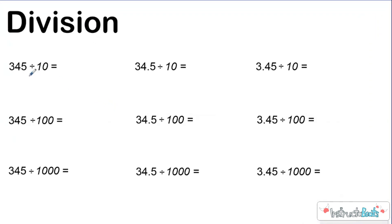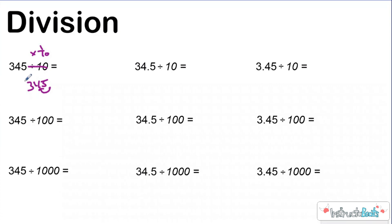Now we're dividing by ten. Remember, as we move to the left on our place value chart, we got bigger times ten. When we move to the right, we're getting smaller by one-tenth. So dividing by ten is really just like multiplying by one-tenth, which means I need to move my digits over to the right one place value. If I move my decimal place to the left, then I've taken my three in the hundreds place and put it in the tens place. My answer's thirty-four and five-tenths. Same thing here dividing by ten — move it one place value to the left — so my answer's three and forty-five hundredths.